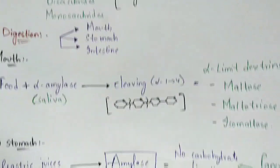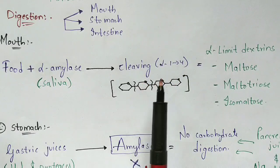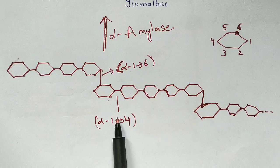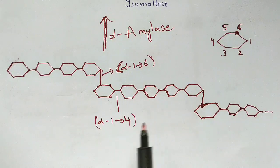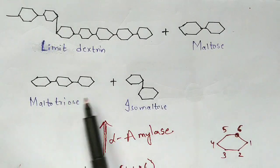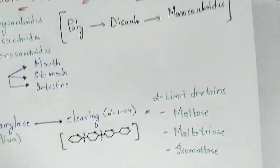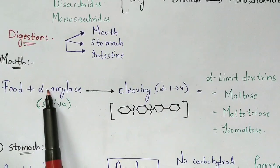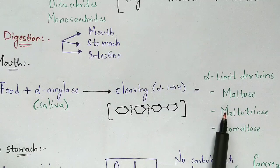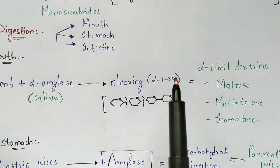Alpha amylase cleaves alpha 1 to 4 glycosidic linkages only; cleavage of alpha 1 to 6 glycosidic linkages does not occur. The products formed from this cleavage are limit dextrins, maltose, maltotriose, and isomaltose. These are the products formed by the activity of alpha amylase present in the saliva, completing carbohydrate digestion in the mouth.